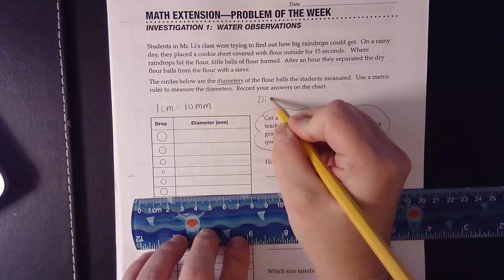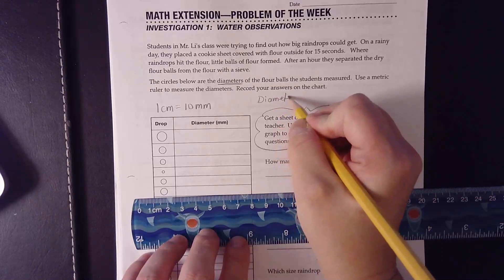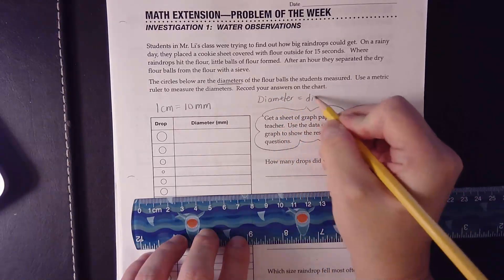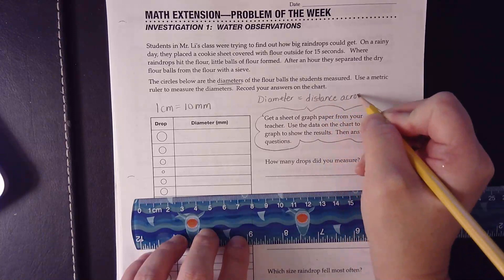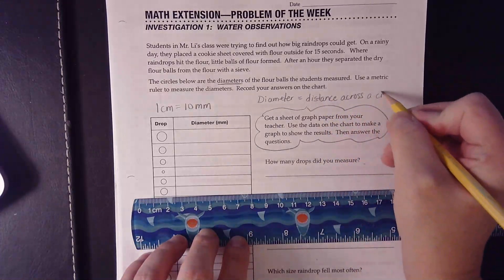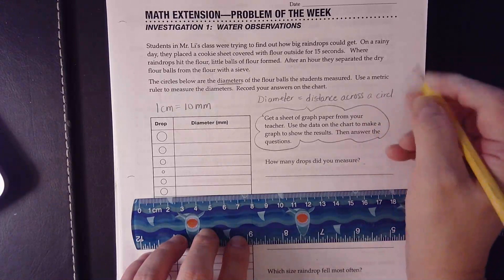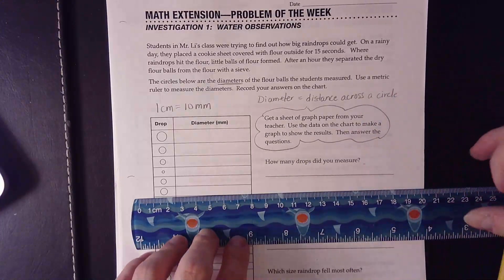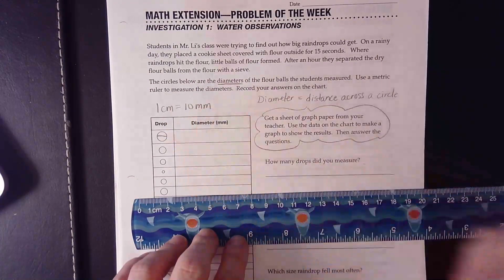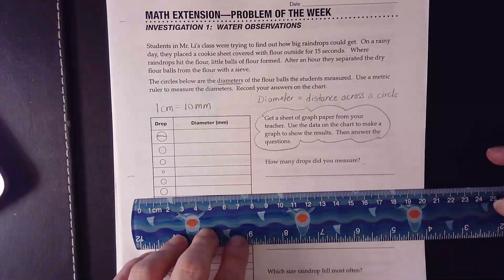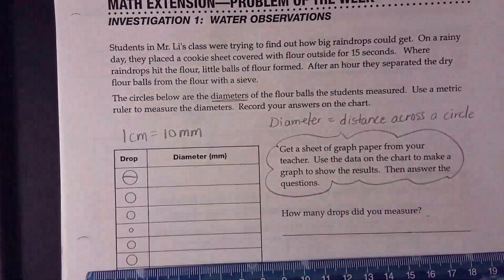The diameter is the distance across a circular object. We'll just say a circle for here. So when we're looking at the diameter, friends, we're looking right across there for every single one of those circles. All right, so let's go ahead and get down to figuring out the diameter in millimeters.